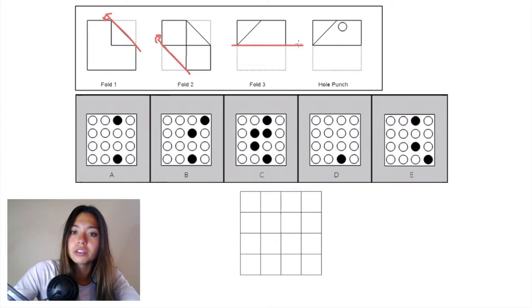In fold three, we have a horizontal plane and we're folding this paper that was left on the bottom half up into this trapezoid right here.